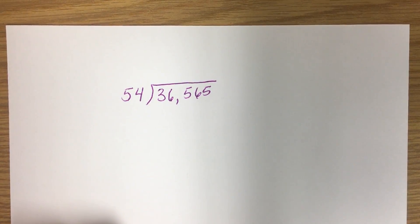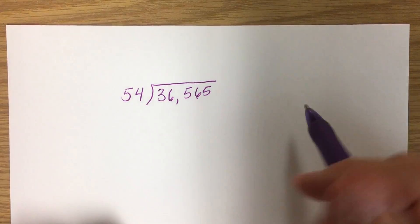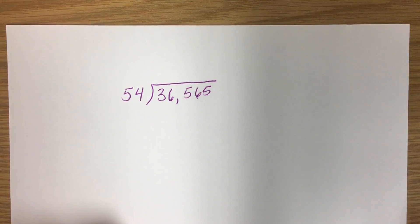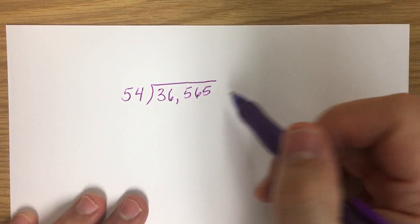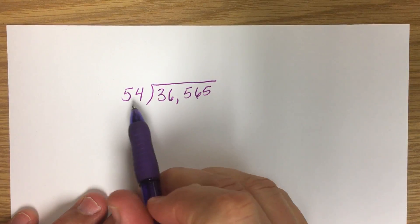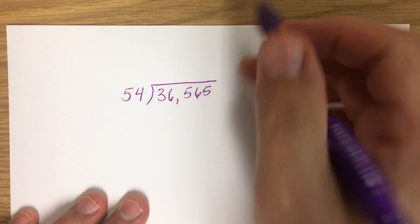We're going to divide by two-digit divisors using the distributive property method. First, we're going to go ahead and estimate.